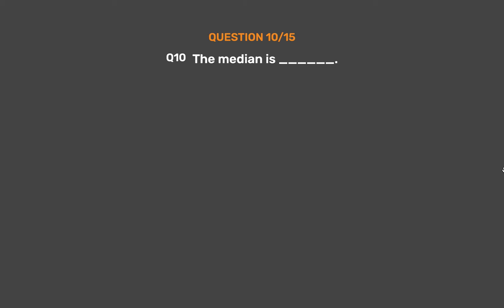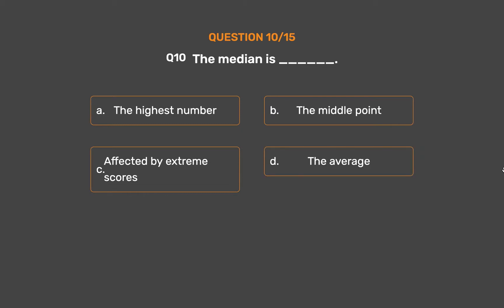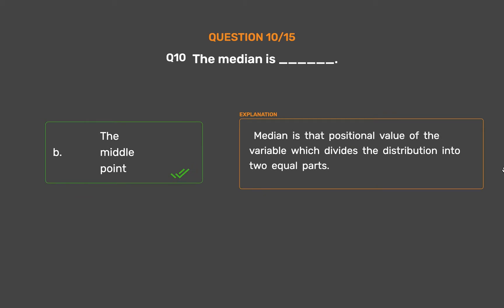Question number 10. The median is blank. Option A: The highest number. Option B: The middle point. Option C: Affected by extreme scores. Option D: The average. The correct answer is Option B: The middle point. Median is that positional value of the variable which divides the distribution into two equal parts.